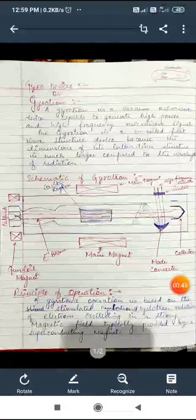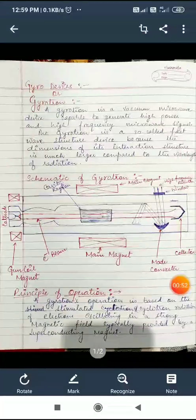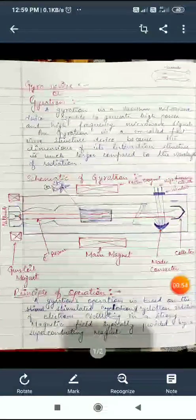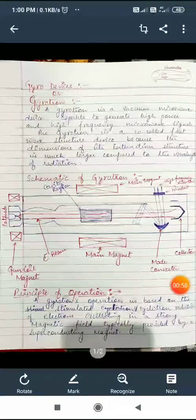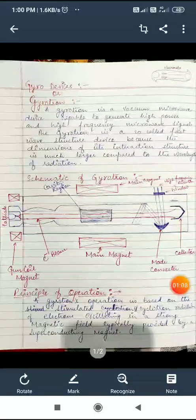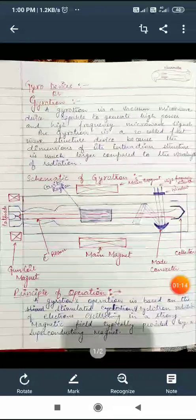Because the dimension of its interaction structure is much larger compared to the wavelength, meaning the electron beam interact with a strong magnetic field has large dimension, so it's called fast wave structure.